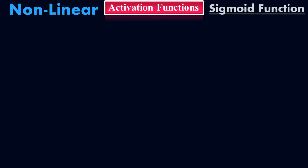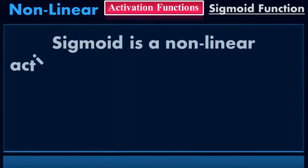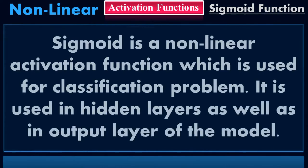Sigmoid activation function is the second type of nonlinear activation function in deep learning. According to the definition, sigmoid is a nonlinear activation function which is used for classification problems. It is used in hidden layers as well as in the output layer of the model.